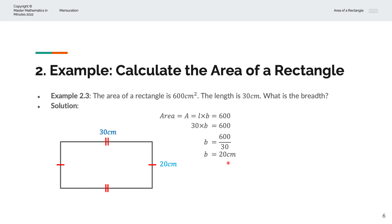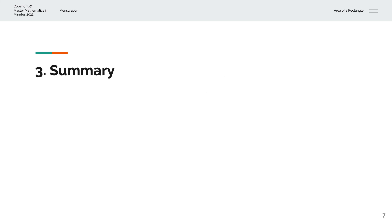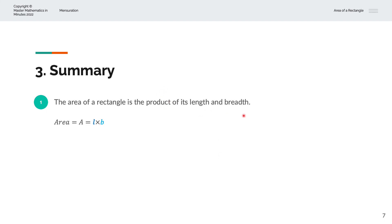So visually, we have a rectangle of length 30 centimeters and breadth B of 20 centimeters based on what we've just calculated. To summarize, the area of a rectangle is the product of its length and breadth, and so the area A is equal to L times B, or length times breadth.